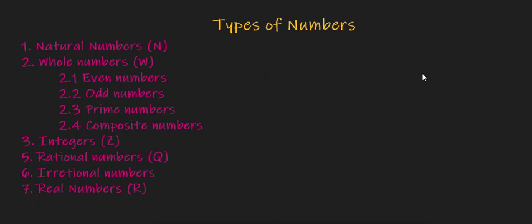Our next type of number is rational numbers, represented by the capital letter Q. Any number that is either an integer or is expressible as the ratio of two integers is a rational number. We can represent a rational number as A divided by B.